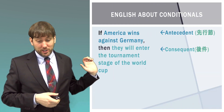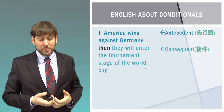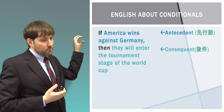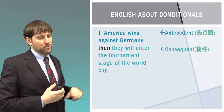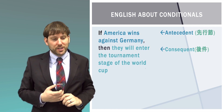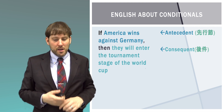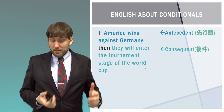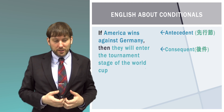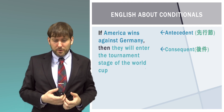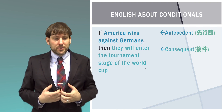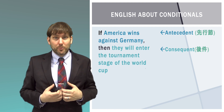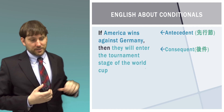I want to explain some English about conditionals because I will use this in other videos and will likely ask you questions about it. For example: 'If America wins against Germany, then they will enter the tournament stage of the World Cup.' We call the part 'if America wins against Germany' the antecedent, which literally means 'comes before.' The part 'then they will enter the tournament stage' is the consequent, which literally means 'follows from.' The antecedent is the condition we need to fulfill in order to get to the consequent.